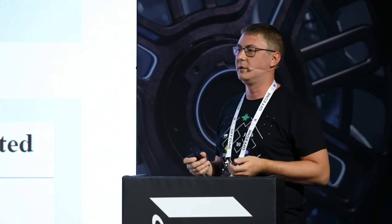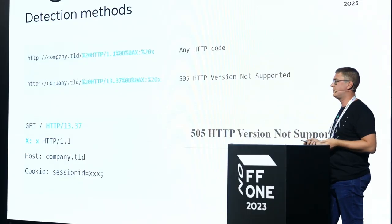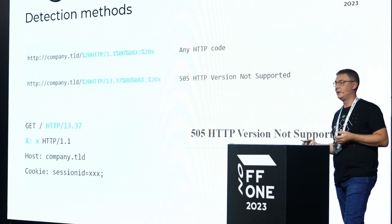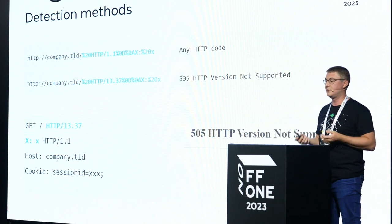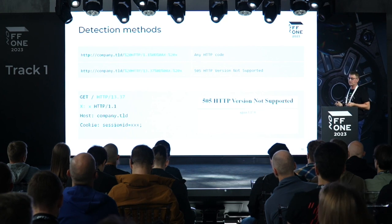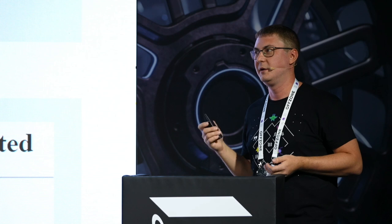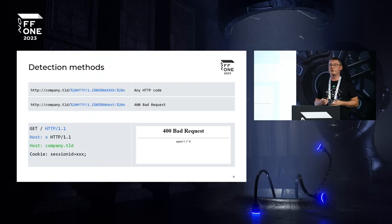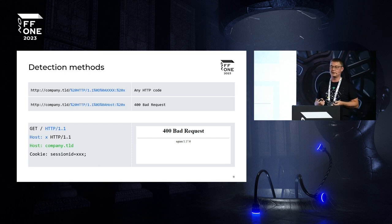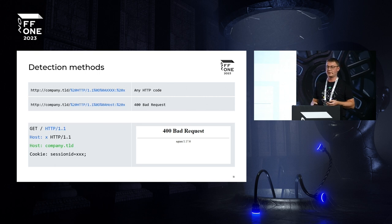If it triggers a 400 Bad Request error, that means injection happened in the starting line of the HTTP request. The 400 Bad Request error can occur during normal web app operation, so you need to implement as many identification methods as possible since different back-end services process these requests differently. Another approach is to use correct syntax but an incorrect protocol version, which triggers a 505 error. In ordinary usage you rarely encounter a 505 error, so there's a high probability that it indicates a vulnerability.